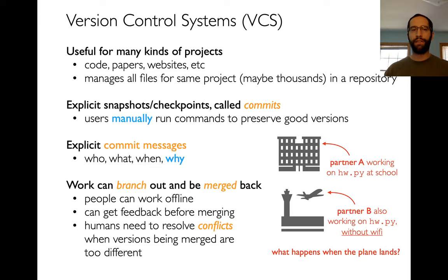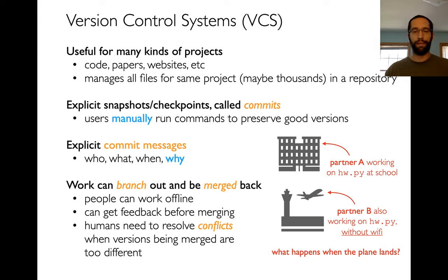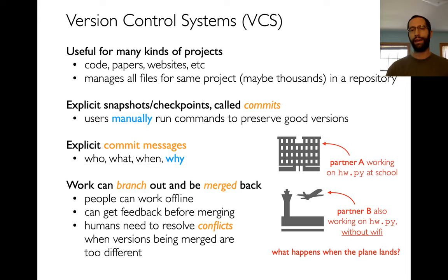A more heavyweight alternative is version control systems, abbreviated VCS. These are not happening automatically, but they do a lot of the same things, and they're useful for larger projects. That could be code — the main example — where you're writing projects with dozens of different Python files. You can use it for papers, books with many files like images, or websites. Version control manages all these, with a consistent point in history that looks across all different files at the same time.